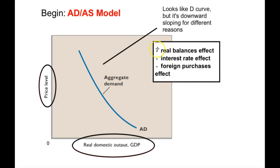The three reasons why aggregate demand is downward sloping are listed in this box. Number one is the real balances effect — the balance on your bank account, for example. When the price level rises, the balance of money you have in a savings or checking account loses value; it can't buy as much anymore because of inflation. Where your dollar used to buy a pack of gum, now you need $2. So when you lose purchasing power, that real balances effect means as price level goes up, you actually buy less stuff.